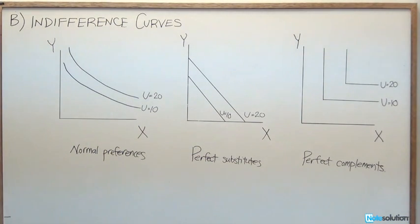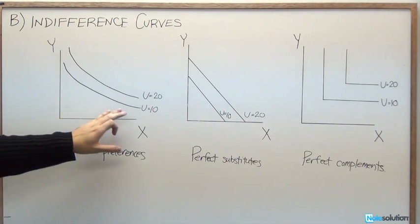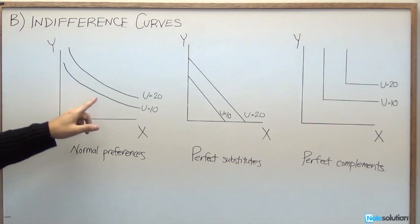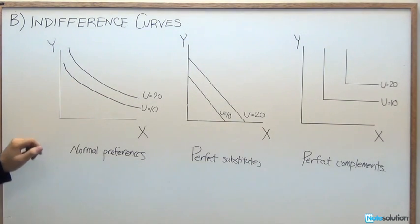If ever these come up on an exam, you'll know them when you see them. With normal preferences, we had all those properties we just covered. We've got convex indifference curves, downward sloping indifference curves, and notice how they never intersect. We've seen this.